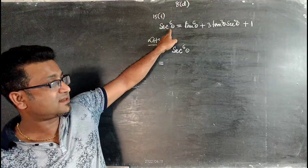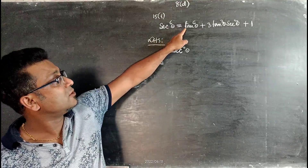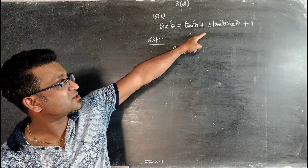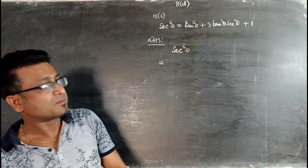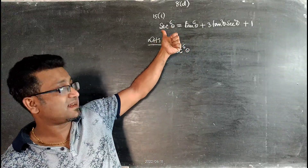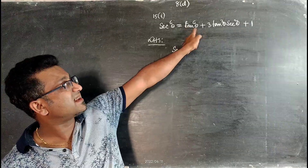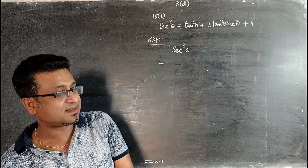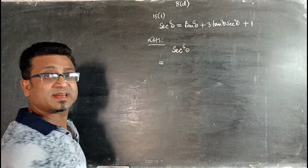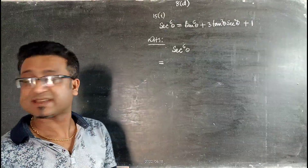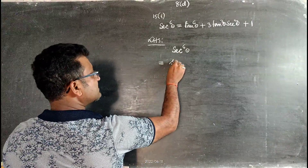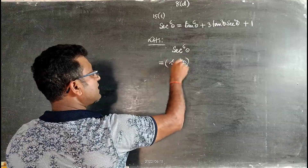First part of question number 15: prove sec⁶θ = tan⁶θ + 3tan²θsec²θ + 1. In the left hand side there is only sec, while the right hand side has tanθ and secθ. So we express sec⁶θ in terms of tanθ by writing it as (sec²θ)³.